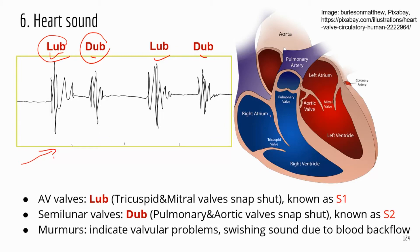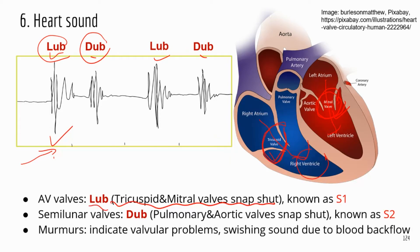When blood travels from the two atria to the two ventricles, the ventricles contract and try to push blood into the blood vessels. To prevent backflow, the two AV valves — the atrioventricular valves, including the tricuspid valve and mitral valve — close so that blood does not backflow to the two atria. The closing of these two AV valves generates the lub sound, which is S1, sound one.